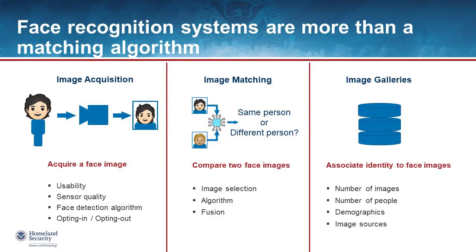Face recognition systems are complicated pieces of technology, but they really boil down to a few key parts. First, face recognition systems are designed to identify humans — at the end of any face recognition system, you'll find a person. That person has their picture taken by some kind of camera, which can be anything from a point-and-shoot disposable to a phone to a specifically designed facial recognition camera. The output is the same: a picture of that person's face. This stage of the process is called image acquisition. People often overlook this part, but it's actually a crucial component to the overall process.